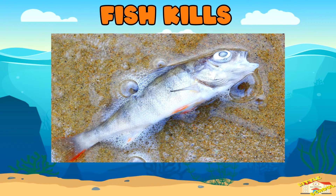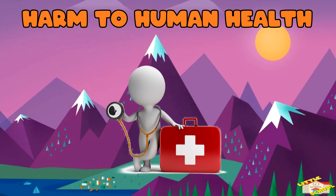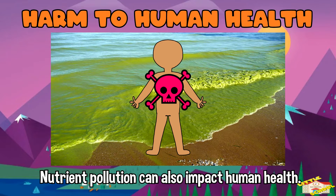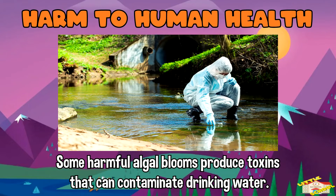Fish kills: in extreme cases, the low oxygen levels caused by nutrient pollution can lead to fish kills. Nutrient pollution can also impact human health. For example, some harmful algal blooms produce toxins that can contaminate drinking water and pose health risks to people and animals.